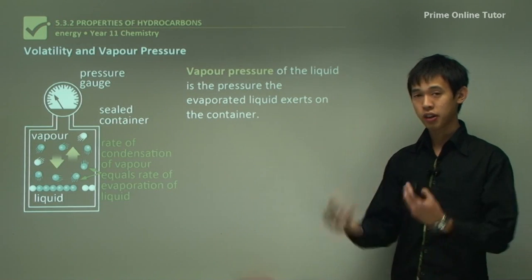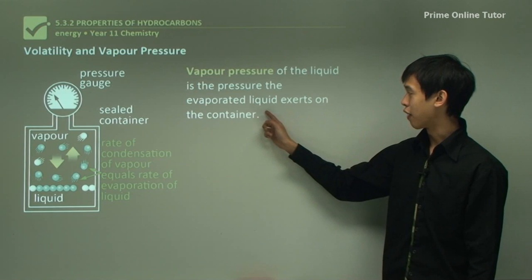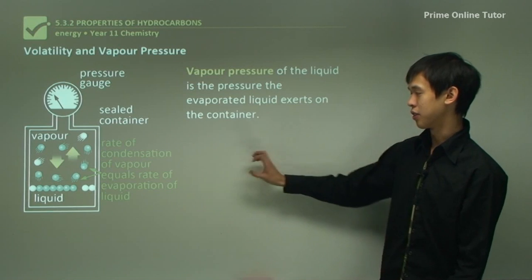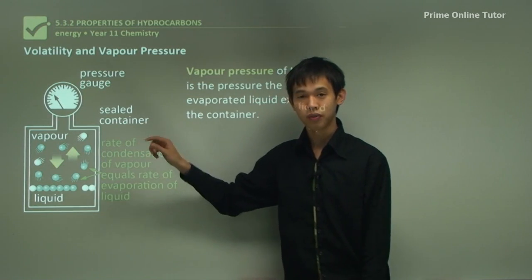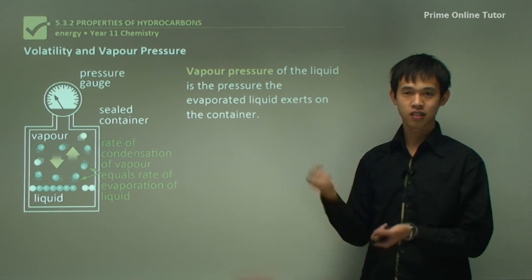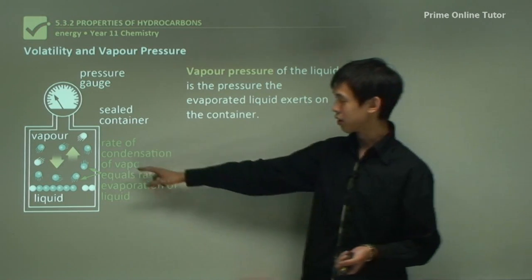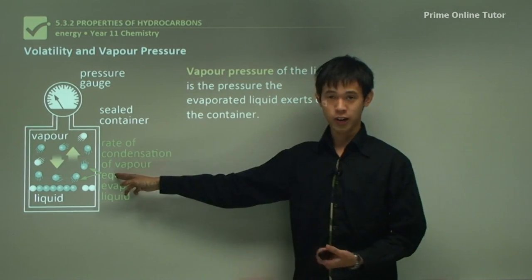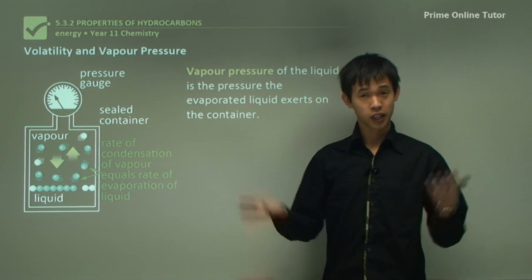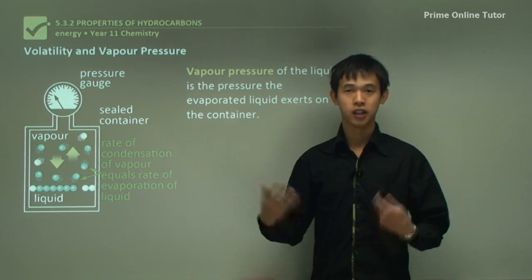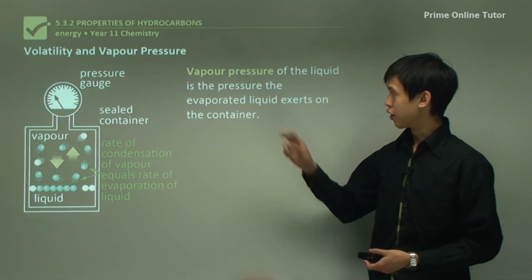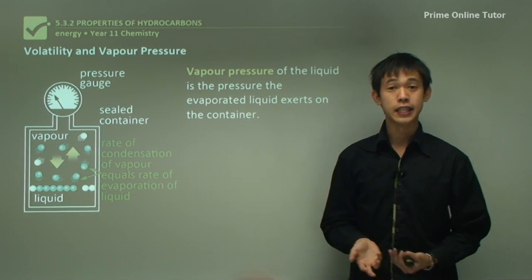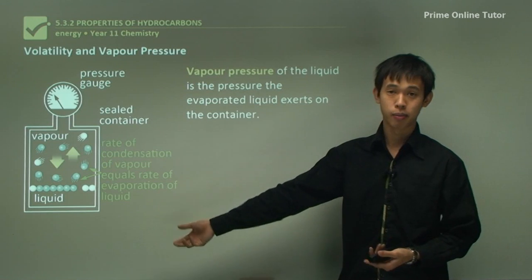Vapor pressure is the pressure the evaporated liquid exerts on a container. Because each gas particle hitting the container wall exerts a small force — a change of momentum — and the more particles you have, the more collisions with the wall, the greater the force and therefore the greater the pressure. So vapor pressure is how much pressure we exert on the container wall because of the amount of gas in the container compared to the amount of liquid.